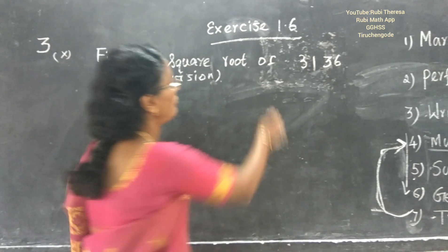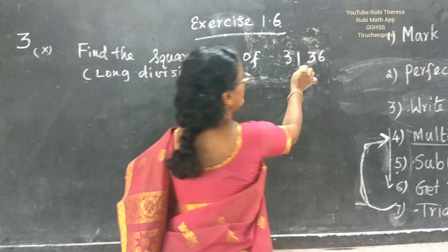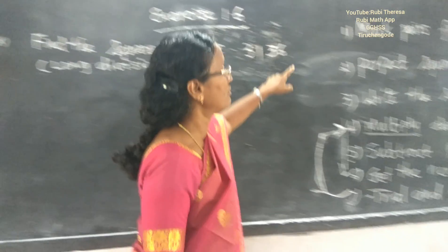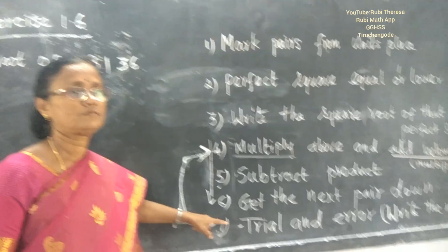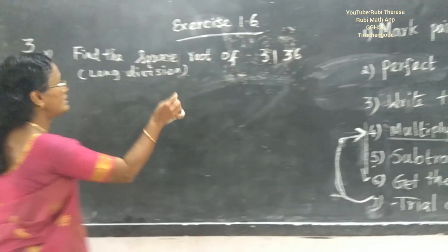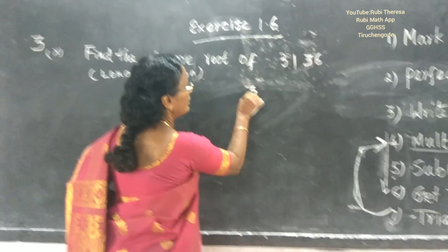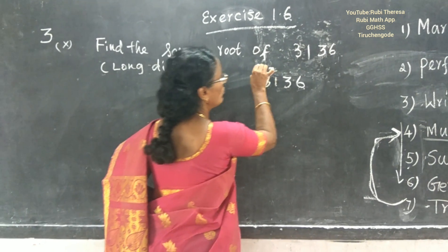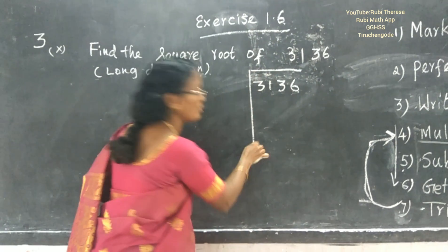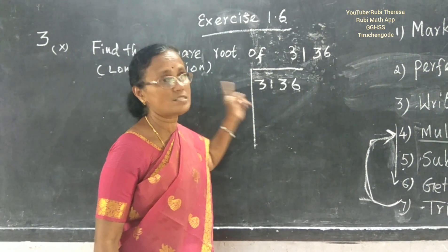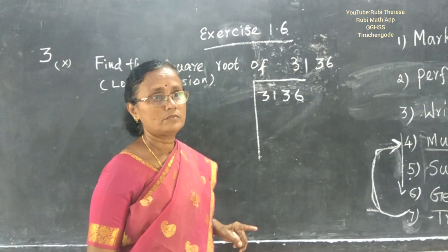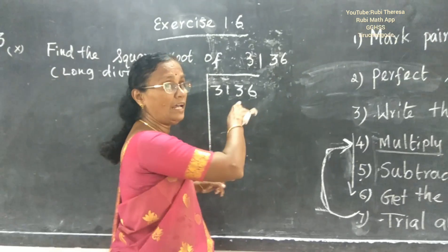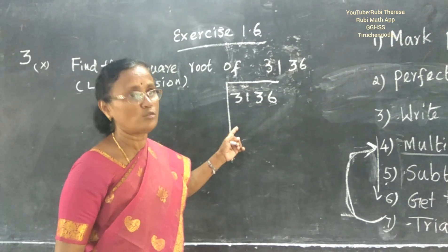Find the square root of 3136 by the long division method. I have written the procedures. First, write the number 3136 and draw a line above and to the left, because this is long division. We use long division because for larger numbers it is better to use this method.